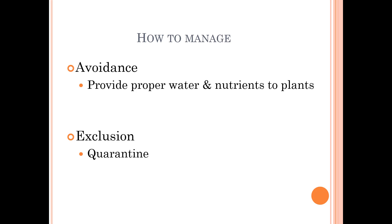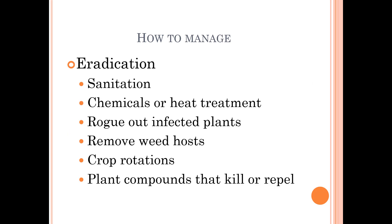There are not a lot of great ways to manage nematodes. Avoidance means making sure you're providing everything plants need. Exclusion means quarantining plants before mixing them with others. Eradication involves sanitation — you might try heat treatment or chemicals, rogue out infected plants, remove weed hosts, and do crop rotations. You can also use plant compounds to kill or repel nematodes. The key plant to know is marigolds, but you have to pick the right marigold for the right nematode. It's not just a matter of interplanting — you need to do a cover crop of marigolds to really manage or repel them.